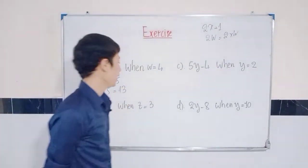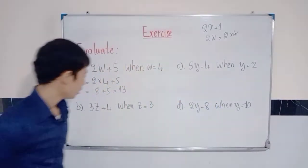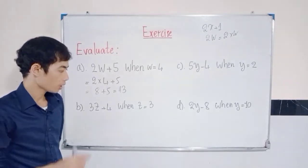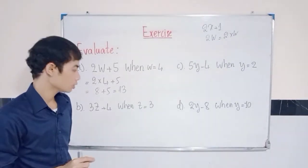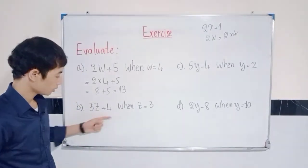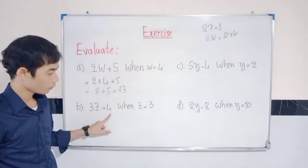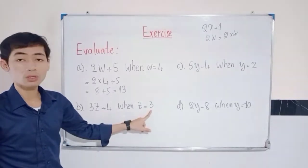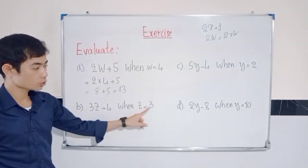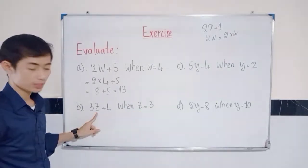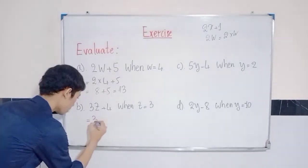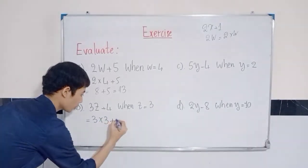You can do question B. Letter B is the same. First, you need to understand how to substitute the value. We have the expression 3z plus 4 when z is equal to 3. Then you can use 3 instead of z. So, here is 3 times 3 plus 4.